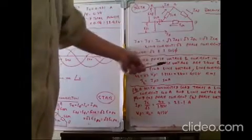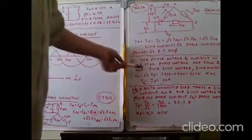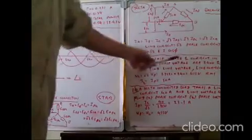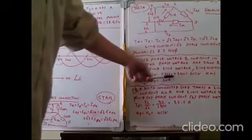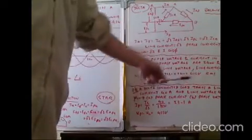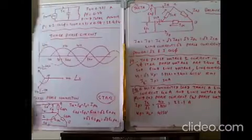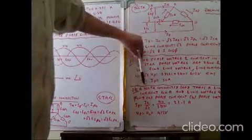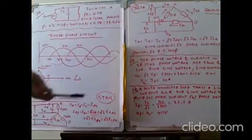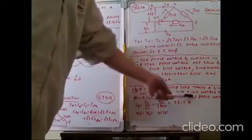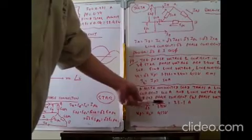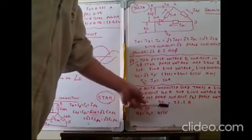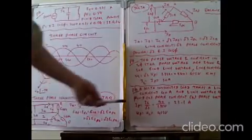Example: In a three-phase star connection, phase voltage is 240 V and current is 50 A. Find line voltage and line current. Line voltage = √3 × phase voltage = 1.732 × 240 = 415 V. Line current equals phase current = 50 A. Another problem: delta-connected load, line current 40 A, line voltage 415 V. Phase current = line current / √3 = 40 / 1.732 = 23.1 A. Phase voltage equals line voltage = 415 V.